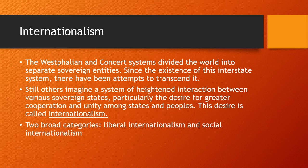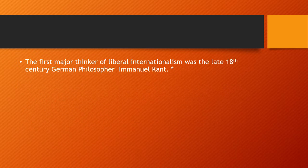There are two broad categories of internationalism: liberal internationalism and social internationalism. The first major thinker of liberal internationalism was the late 18th century German philosopher Immanuel Kant. Kant likened states in a global system to people living in a given territory. If people living together require a government to prevent lawlessness, shouldn't that same principle be applied to states? Without a form of world government, he argued, the international system would be chaotic. Thus, Kant imagined a form of global government.